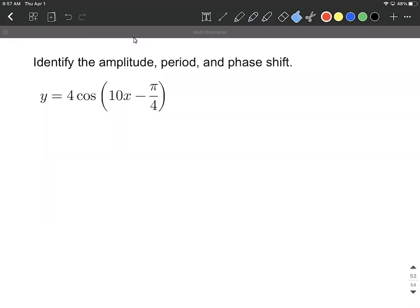First up, let's find the amplitude. The amplitude is going to be given by this number out in front. What we want to do is actually take the absolute value of that number. This one is already positive, so that means the amplitude is going to be positive 4 for this function.